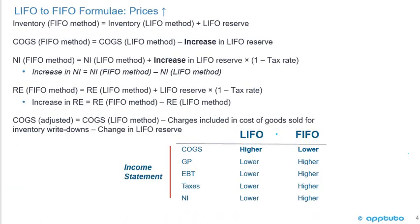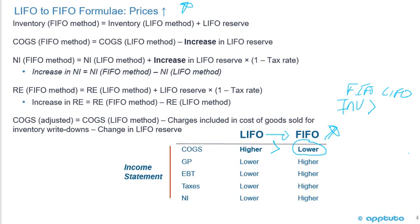Now we'll work through in more detail the conversion of statements from LIFO to FIFO in a situation where prices are rising. If inventory prices are rising, FIFO will have a lower cost of goods sold, because we're selling the least expensive inventory — the older units at the lower price. So COGS is lower than under LIFO, and inventory is higher under FIFO. The FIFO inventory equals the LIFO inventory plus the LIFO reserve, and we get information on the LIFO reserve in the notes to the financial statements.